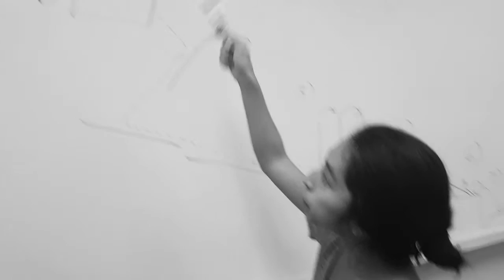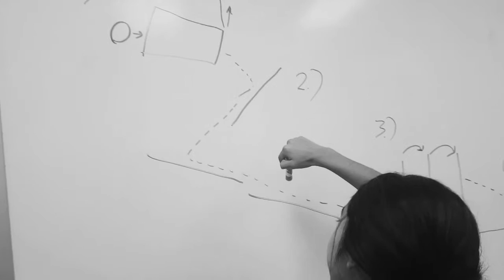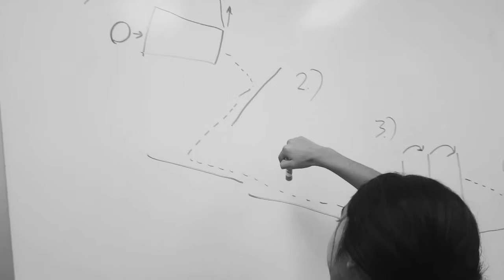So step one involves pulling a string attached to the top of a bottle, and that releases the ball. The ball goes through a series of bottles that are cut in half that function as tubes, just to guide the ball.